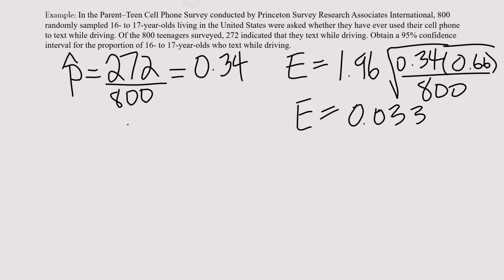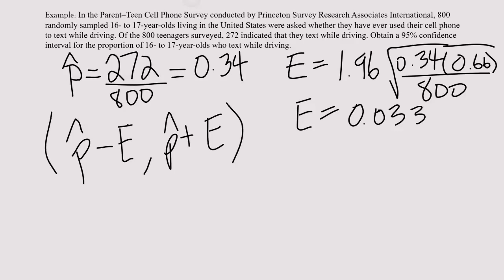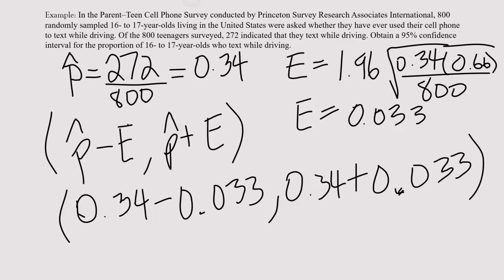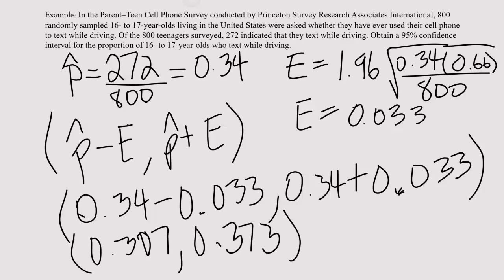Now we can find our confidence interval. We do p-hat minus the margin of error for the lower bound and p-hat plus the margin of error for the upper bound. That is 0.34 minus 0.033 and 0.34 plus 0.033. Subtracting gives 0.307, and adding gives 0.373. That gives us our 95% confidence interval.